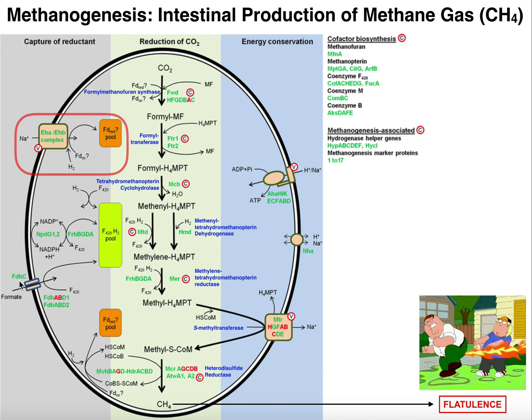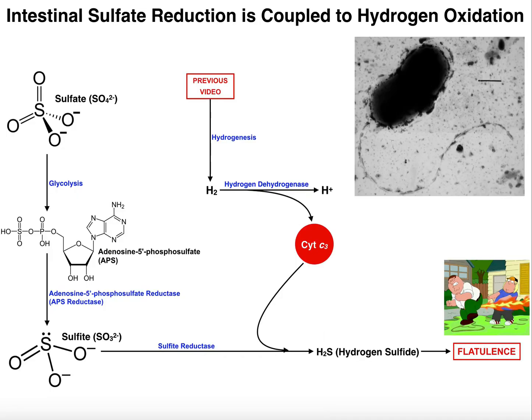Hopefully this video made sense. Hopefully you understand a little bit more about methanogenesis as it's occurring in the intestines and how we actually get methane gas ultimately from carbon dioxide. Please make sure to like this video and subscribe to my channel for future videos and notifications. In the next video, we're going to go over intestinal sulfate reduction, and we'll also see that this is a process actually coupled to the hydrogen oxidation that we just saw.